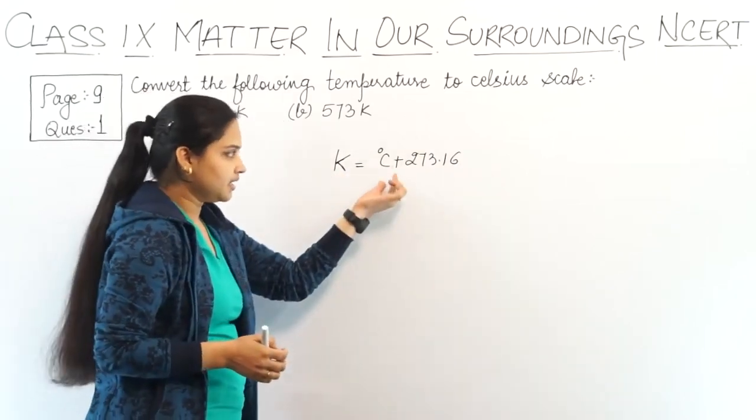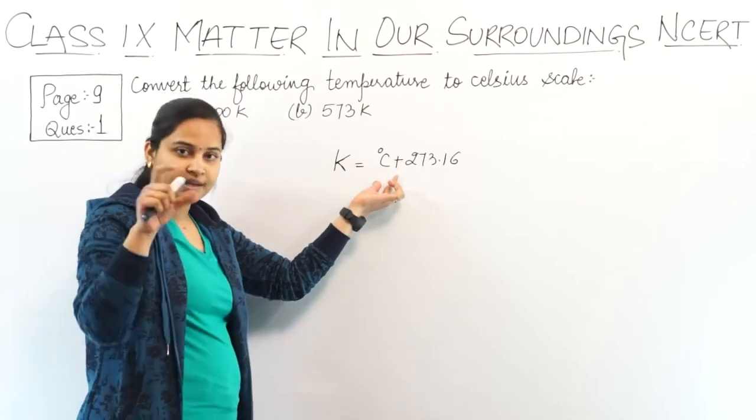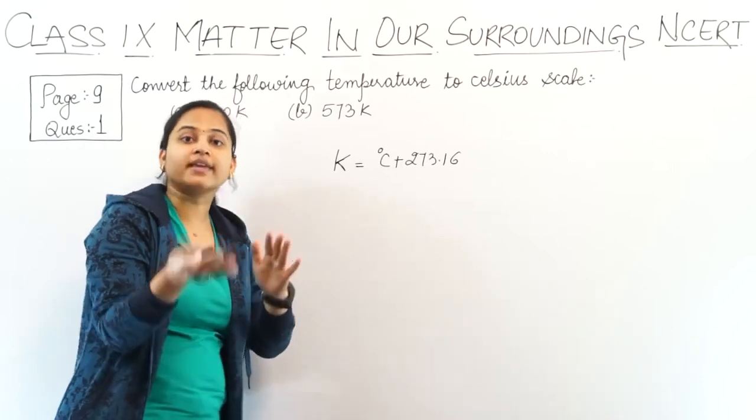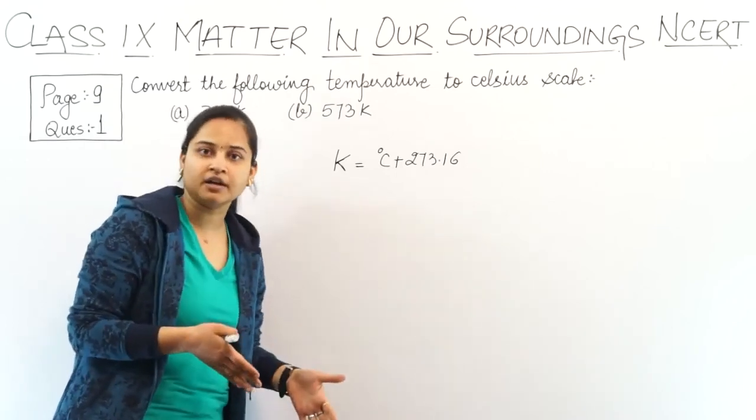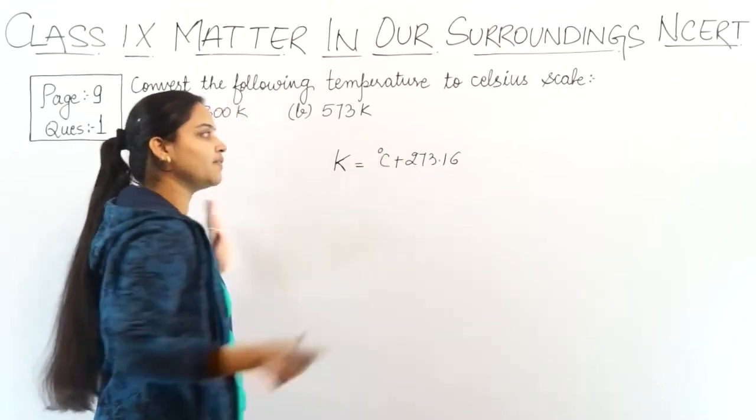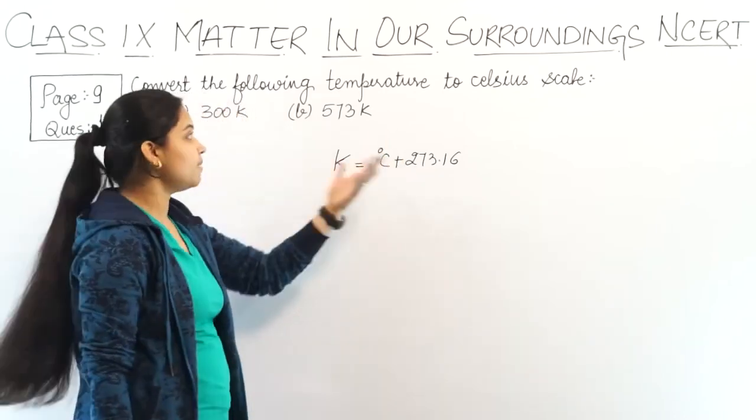This means if I have a temperature given in degree Celsius, then how do I convert to Kelvin? I will add 273.16 to the degree Celsius value. It's the general formula.